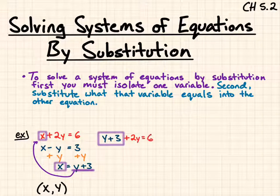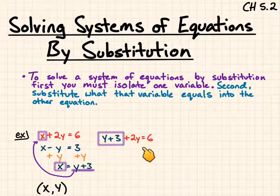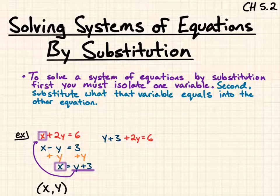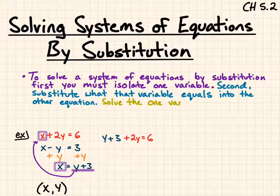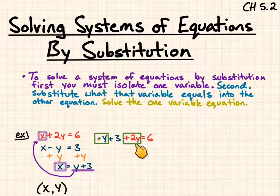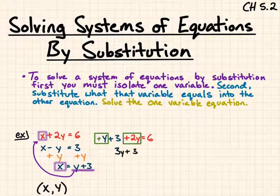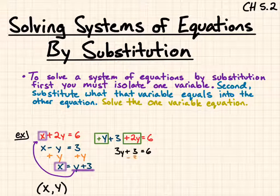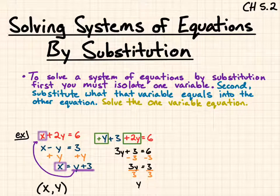I end up with y plus 3 plus 2y equals 6. Now I'm going to be combining like terms, or solving for the one variable. Combining like terms gives 3y plus 3 equals 6. Solving this two-step equation, I end up with y equals 1.